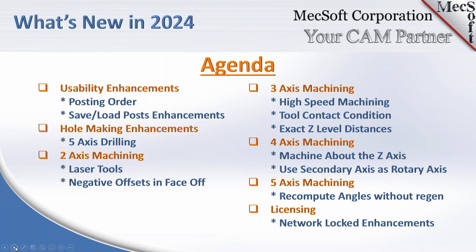For mold makers, tool contact condition has been added for surface-based machining — Don will spend time showing the toolpath differences. Exact Z-level distances have also been added. We'll also talk about four-axis and five-axis machining changes, and finally licensing changes.